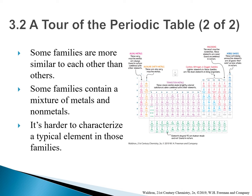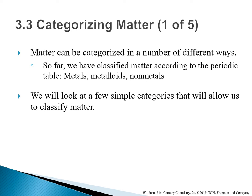Some families are more similar to each other than others. Some families contain a mixture of metals and non-metals, making it harder to categorize a typical element in those families. Matter can be categorized in a number of different ways. So far, we have classified matter according to the periodic table: metals, non-metals, and metalloids. We will look at a few simple categories that will allow us to classify matter.